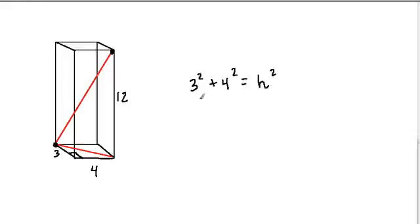You might recognize this as a 3-4-5 triangle, but let's solve anyway. 3 squared is 9, 4 squared is 16, h squared is that sum, so h squared is 25. We want to know what's h? It's the square root of 25, or 5. So this little line down here equals 5.